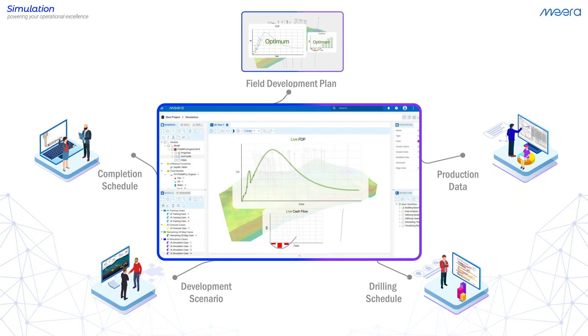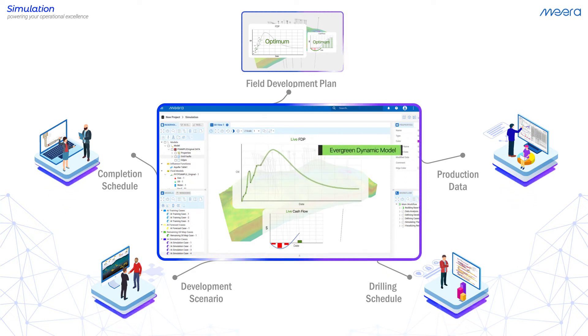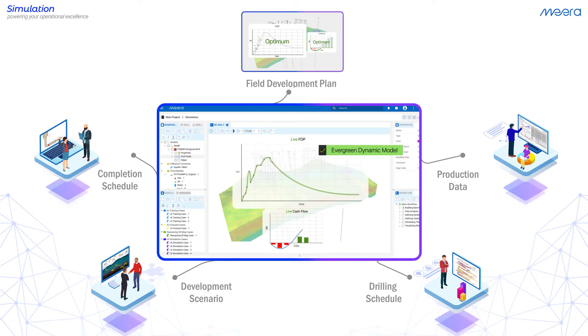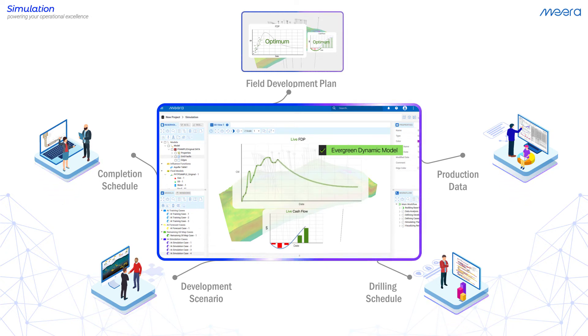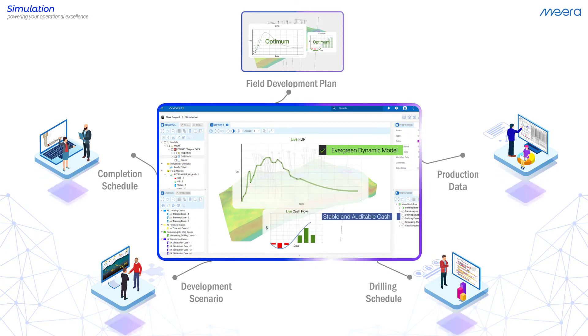Now your engineers can use the evergreen optimum dynamic reservoir model as a super-fast and reliable production forecasting tool for operation planning and budgeting.